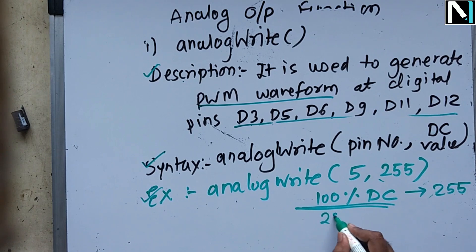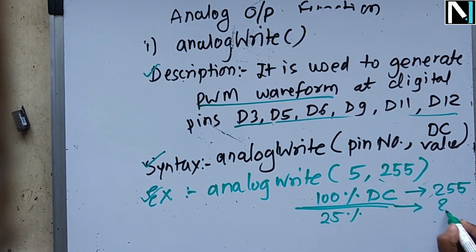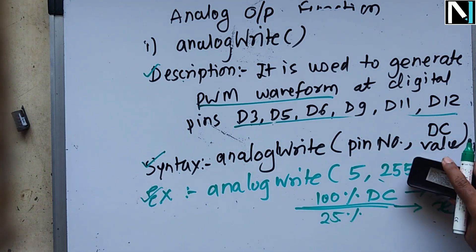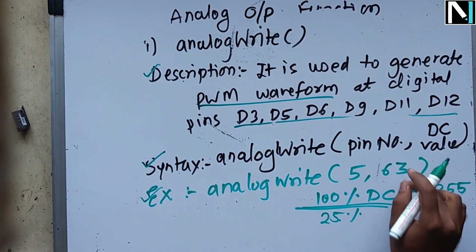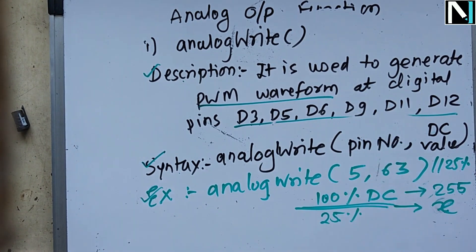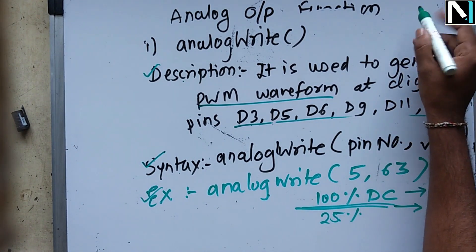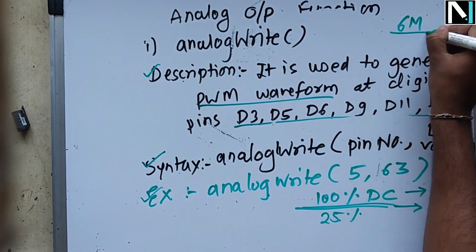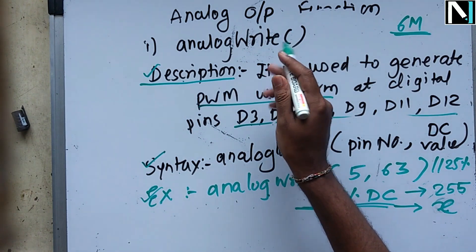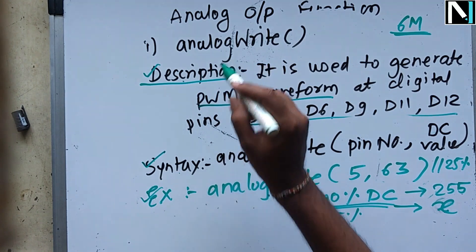To calculate the duty cycle value, use the formula: value = (duty cycle % / 100) × 255. For example, for a 25% duty cycle: (25/100) × 255 ≈ 63, so load 63 into the analogWrite function. In the exam, remember: for analog input there are two functions — analogRead and analogReference — and for analog output there is one function — analogWrite. Each carries two marks. Write your answer with description, syntax, and example.